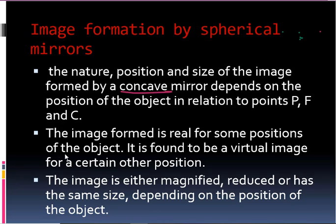For some positions of the object the image is found to be real, and for certain other positions it is virtual. We will see what real and virtual image means in the coming slides. Also, the image is either magnified — meaning the size of the image is more than the size of the object — reduced, meaning the size of the image is less, or has the same size as the object, depending on the position of the object.